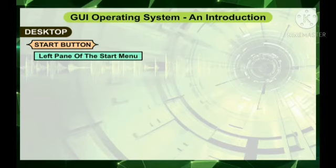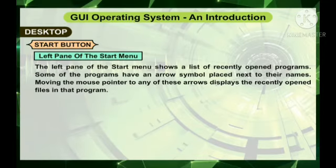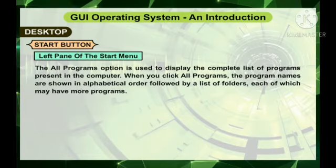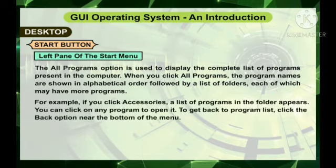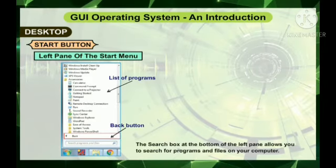The left pane of the start menu shows a list of recently opened programs. Some programs have an arrow symbol next to their names — moving the mouse pointer to any of these arrows displays recently opened files in that program. The All Programs option displays the complete list of programs in the computer. When you click All Programs, program names are shown in alphabetical order, followed by a list of folders, each of which may have more programs. You can click on any program to open it. To get back to the program list, click the Back option. The search box at the bottom of the left pane allows you to search for programs and files.